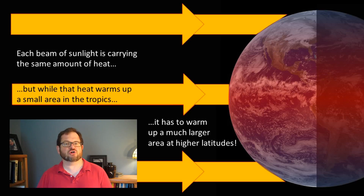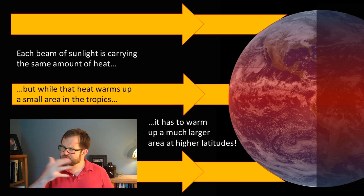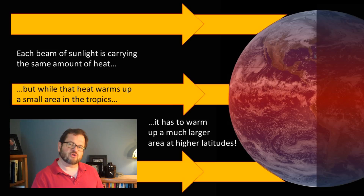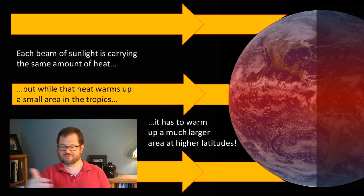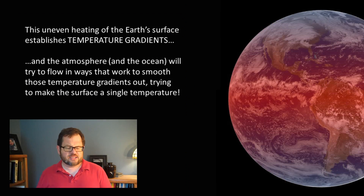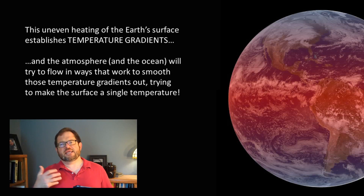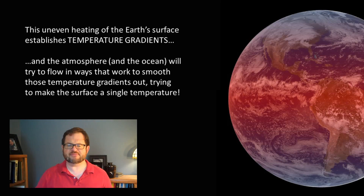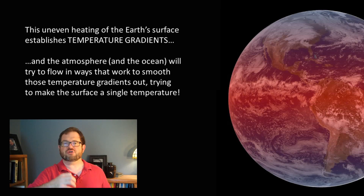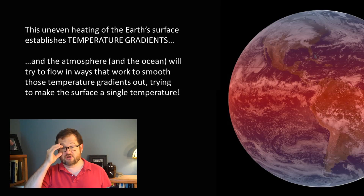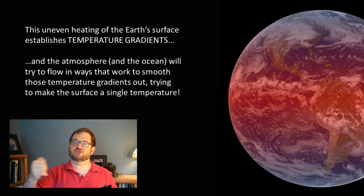This is the root reason why, in general, the polar regions are colder than the tropical regions — illustrated by making the planet more red toward the middle and more blue towards the poles. This uneven heating of the Earth's surface establishes what are called temperature gradients. A gradient is how some property changes over a distance. There is a north-south temperature gradient here because there is a different temperature to the south than there is to the north.